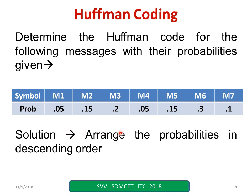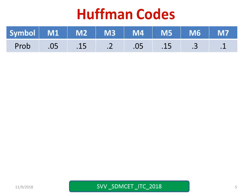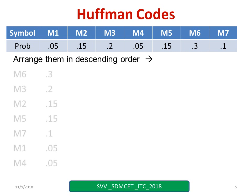Solution: arrange the probabilities in descending order. All these probabilities we have to arrange in descending order. Now we have arranged these probabilities in descending order — 0.3 down to 0.05 — and we have written the symbol names also.